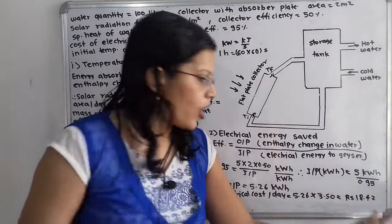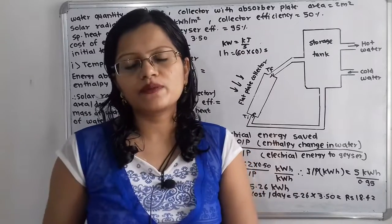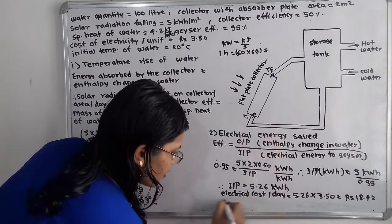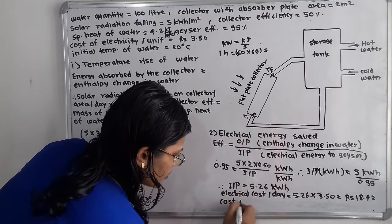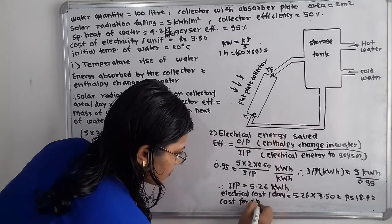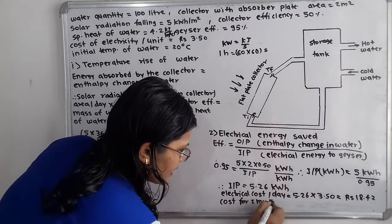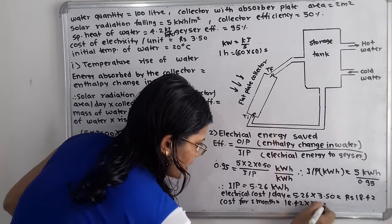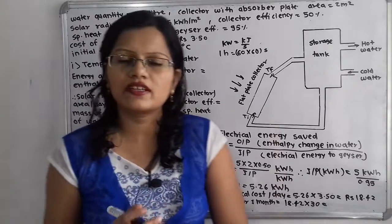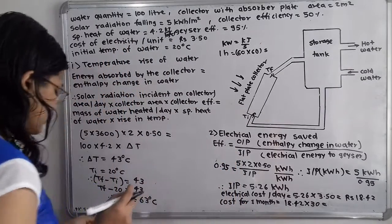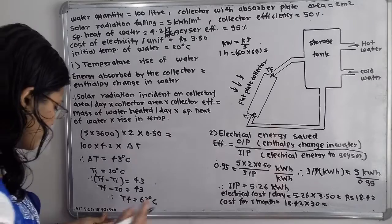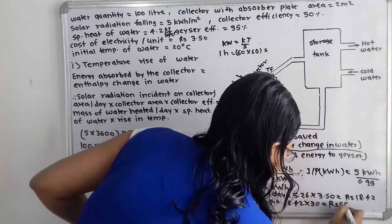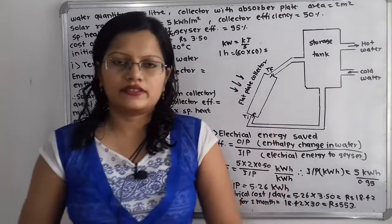Now we will use this daily cost to calculate the cost per month. Electrical cost for one month equals 18.42 multiplied by 30 — considering 30 days in one month — which equals rupees 553. So this is the answer.